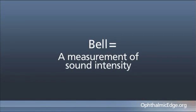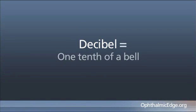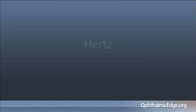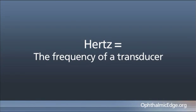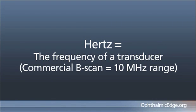A bell is a measurement of sound intensity, and a decibel is one-tenth of that bell. Hertz has to do with the frequency of your transducer, and we are working in the 10 megahertz range for most commercially available B-scan devices.